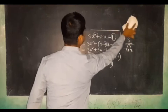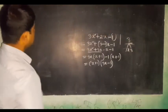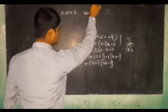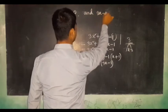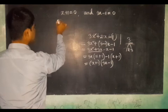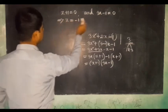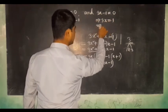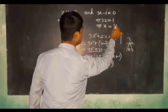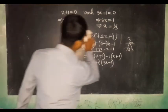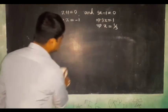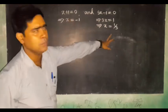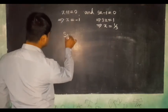Now the zeros of the polynomial are found by setting each factor to zero. x plus 1 equals 0 gives x equals minus 1, and 3x minus 1 equals 0 gives x equals 1 by 3. So the two zeros of the polynomial are minus 1 and 1 by 3.